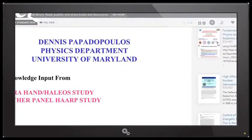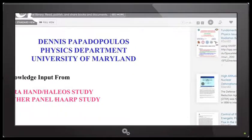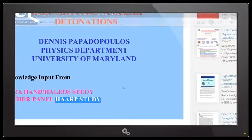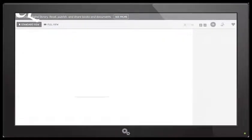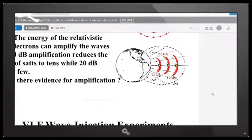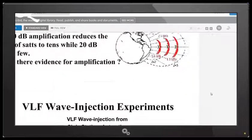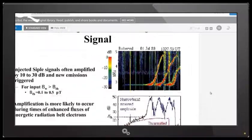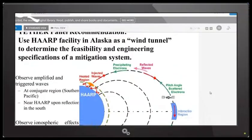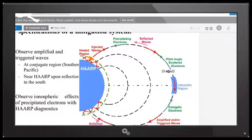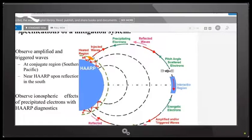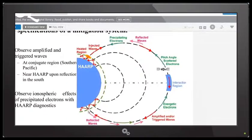So let's get to that. It says acknowledged input from DTRA HAND, Haleo study and tether panel HAARP study. So you go down here to the bottom. What you're going to see is that HAARP has been used as a VLF injection tool. And what they do is they shoot electromagnetic missiles up into space. And these missiles scoop radiation out of the sky.